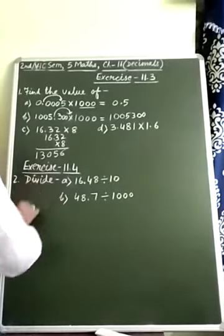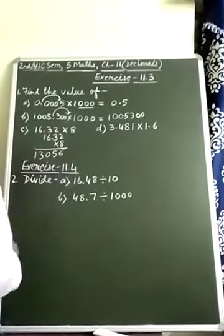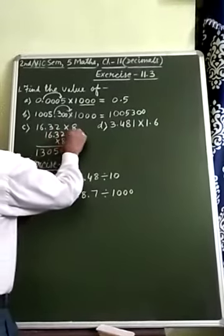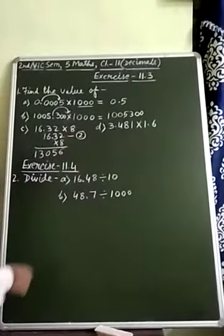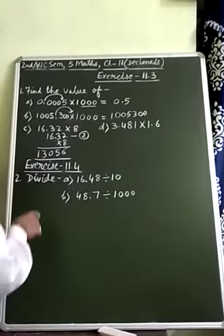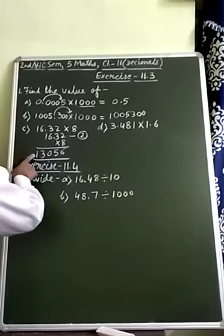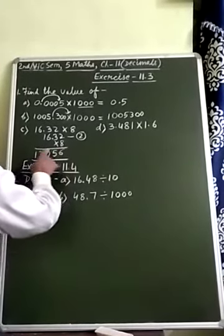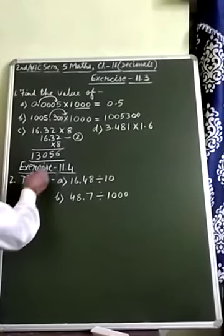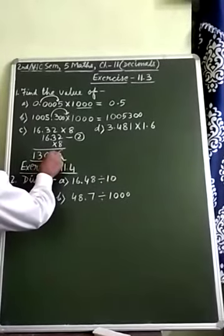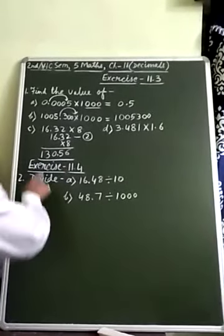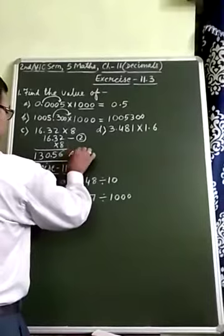Now, in the multiplicand decimal point is here. And after decimal point, as you can see, there are two digits. Therefore, in the product, 13,056, from right to left, we will count two digits and place the decimal point. So, one digit, two digit, decimal point will be placed here, before 5. So, answer is 130.56.